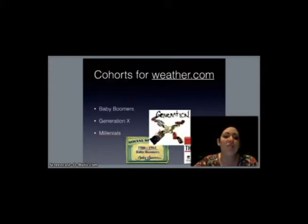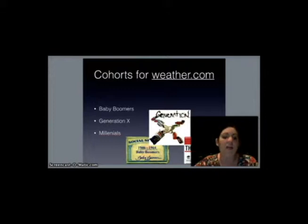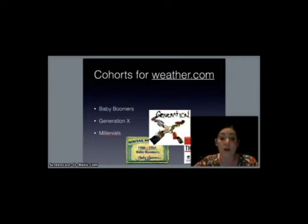The cohorts we're interested in tracking are baby boomers — those who use apps versus those that don't. Generation X — those that have signed up for active alerts versus those that haven't. And millennials — those that have embedded their forecast into their personal sites versus those that have not. We also want to make sure we're tracking the overall percentage of registered accounts for each cohort.